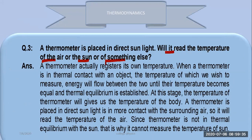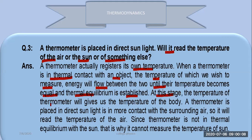The thermometer registers its own temperature. When a thermometer is in thermal contact with an object whose temperature we wish to measure, energy will flow between the two until their temperatures become equal and thermal equilibrium is established. At this stage, the thermometer gives us the temperature of that body.